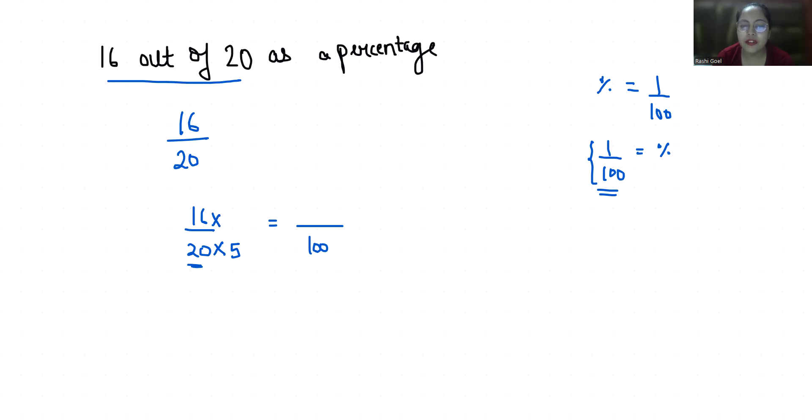It becomes 16 times 5 and 20 times 5 is 100. 16 times 5 is 80 by 100, or we can write it as 80 times 1 by 100.